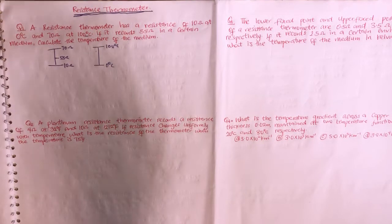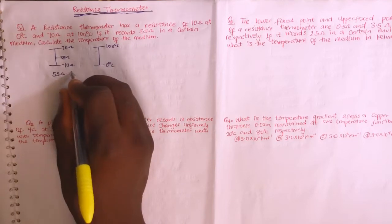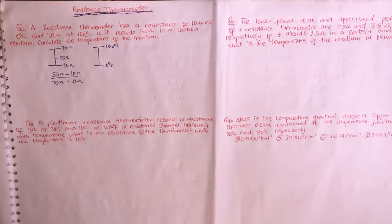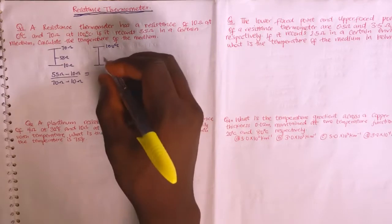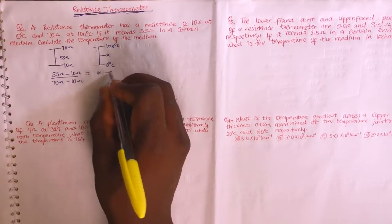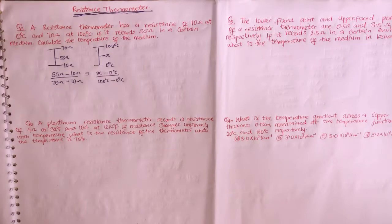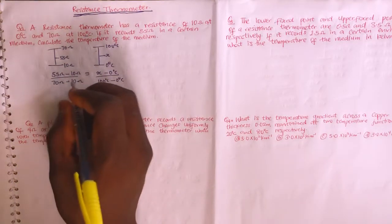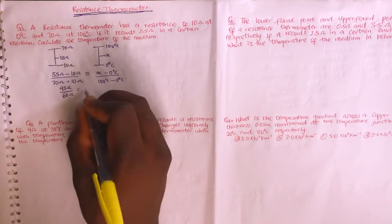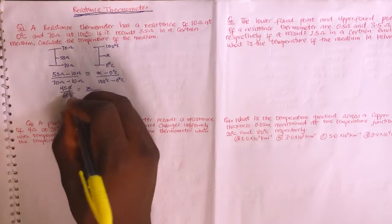Using the same procedure, we take the recorded value minus the lower fixed point, divided by the upper fixed point minus the lower fixed point, and equate it to the Celsius scale. That gives us: (55 − 10) / (70 − 10) = (x − 0) / (100 − 0). Simplifying: 45 / 60 = x / 100°C.